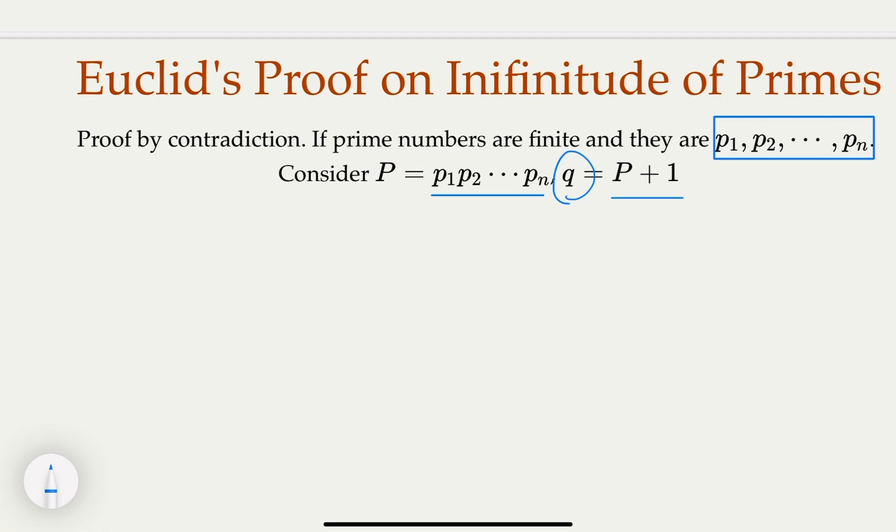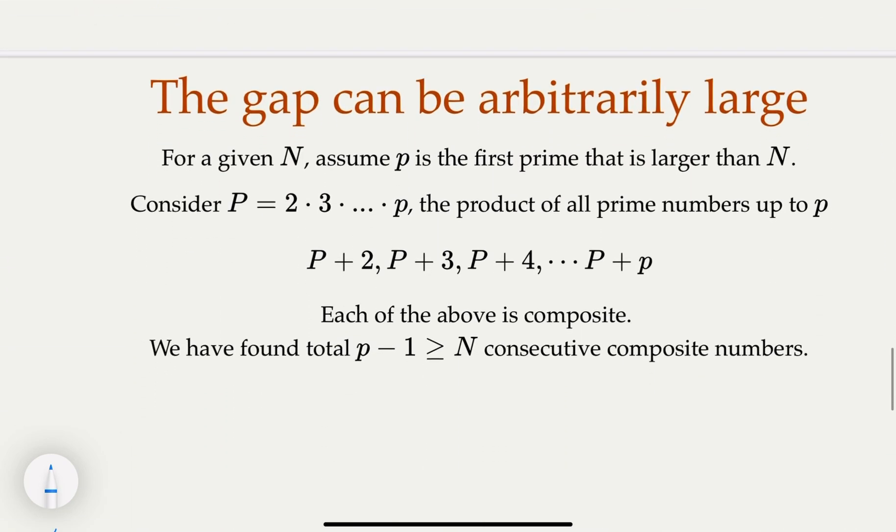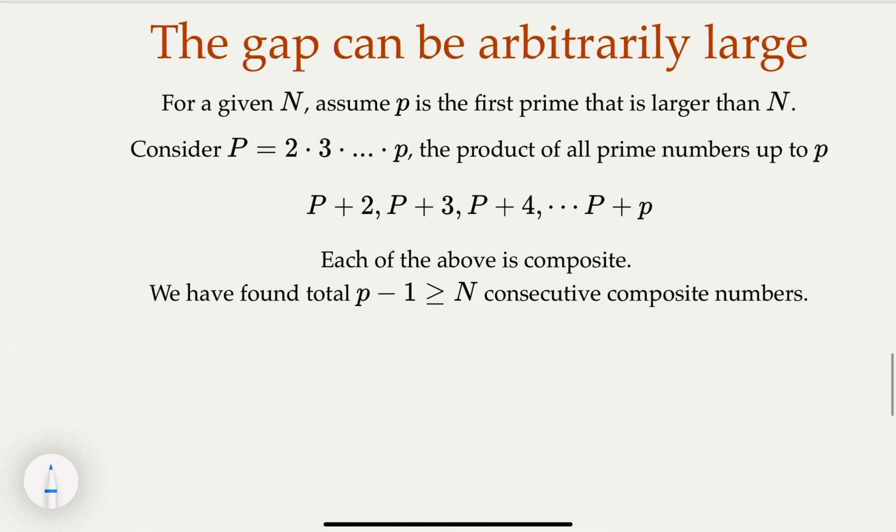Here we're going to use a similar style to prove the gap of prime numbers is very big. Here's the approach: since we know for any given N there's always a prime number greater than that, let p be the first prime number that is bigger than N.